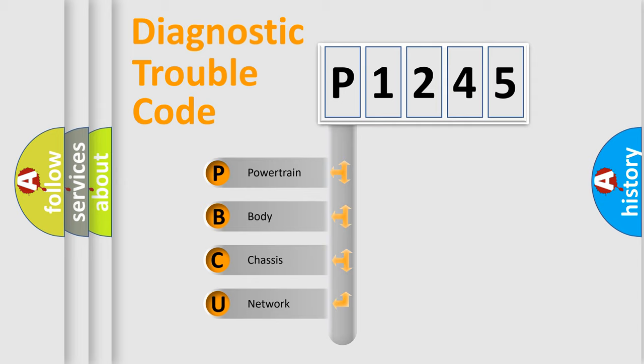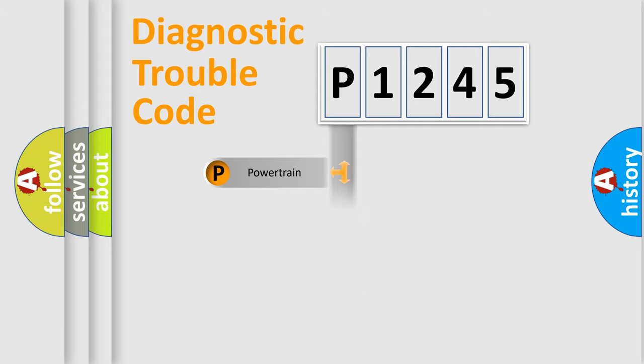We divide the electric system of an automobile into four basic units: powertrain, body, chassis, and network. This distribution is defined in the first character code.